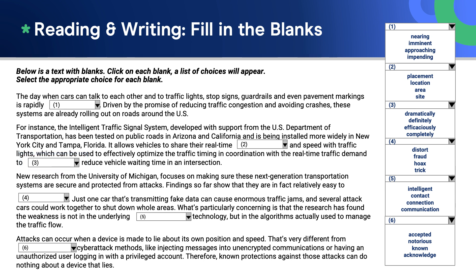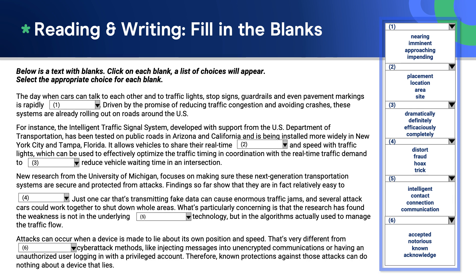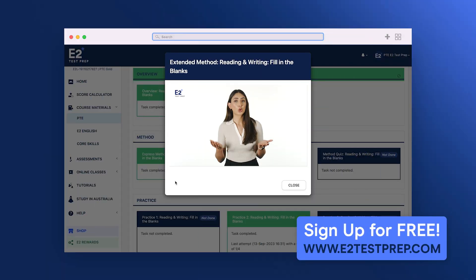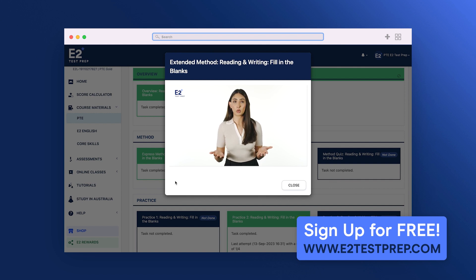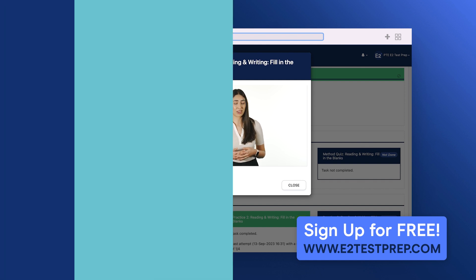If the word following the blank is a plural verb, then the blank may be a plural noun. Finally, eliminate words from the list that cannot be correct, and choose from the remaining words. At e2testprep.com, we have an extended video that walks you through the method in detail with some practice questions and answers. I highly recommend you check it out.